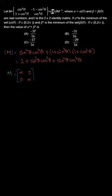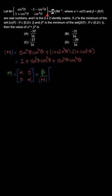We write M equals alpha·I — the identity matrix with 1s on the main diagonal and 0s elsewhere — so alpha·I gives alpha, alpha on the main diagonal. The second term is beta into M inverse, which we write as beta divided by determinant of M, times the adjoint of M.